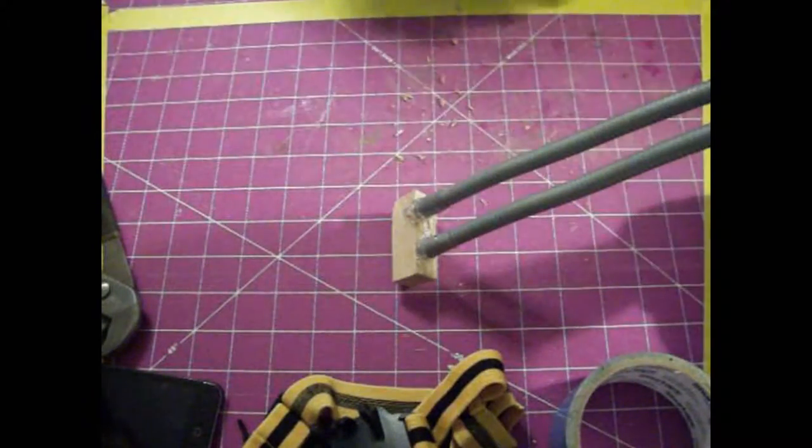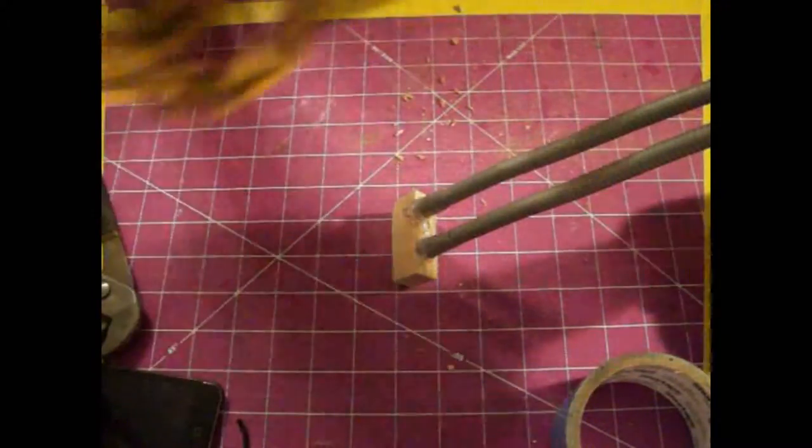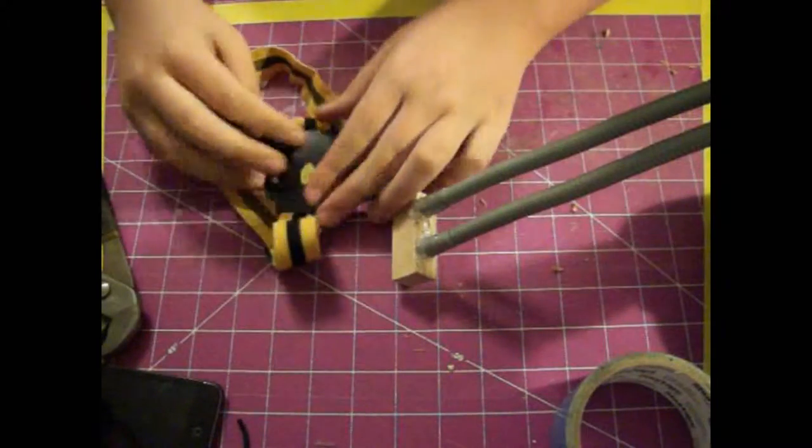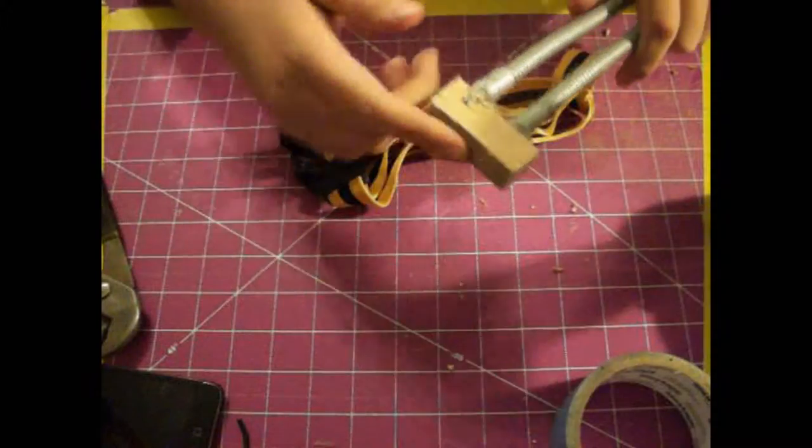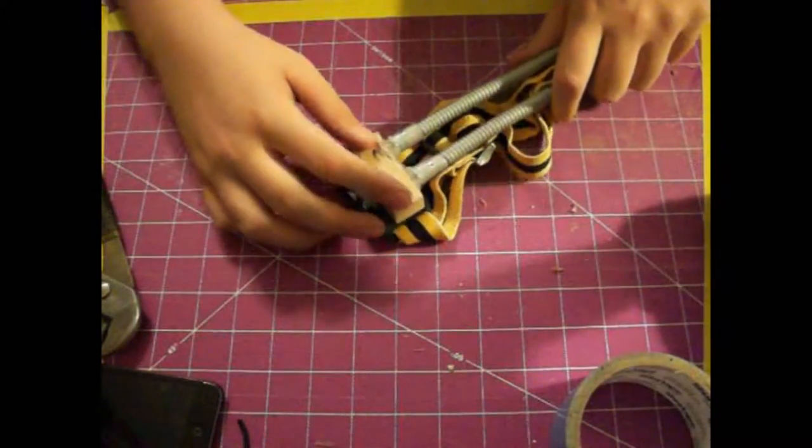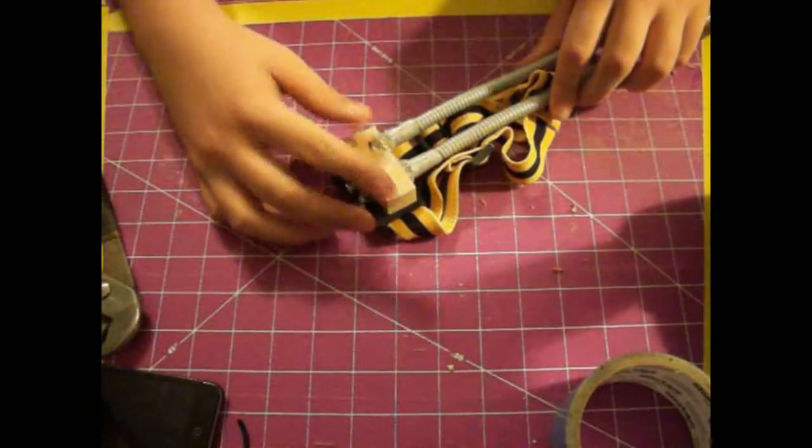Alright. Now, next, we're going to take our headlamp and this small piece. We're going to put it on like so with some hot glue.